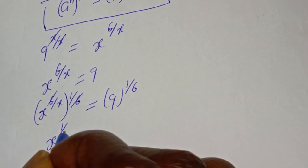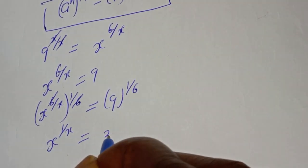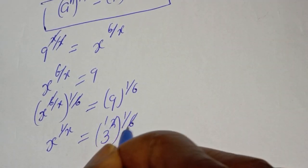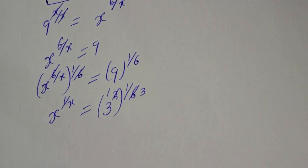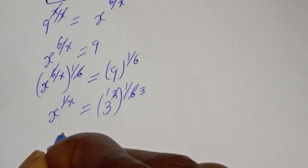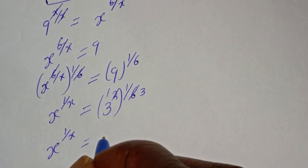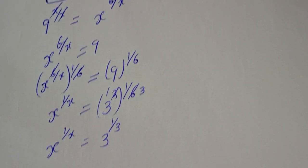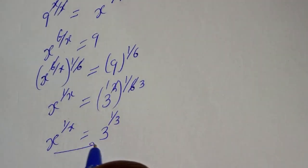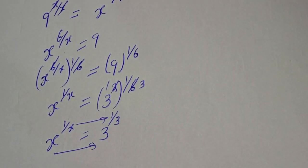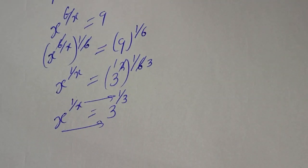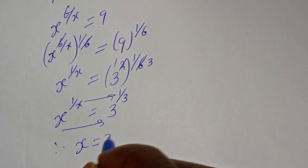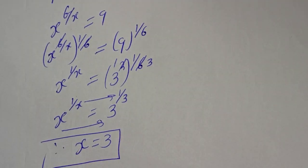s raised to power 1 over 6 is equal to 3 raised to power 1 over 3. Therefore, if you compare this, the base is equal to 3 and the exponent is equal to 1 over 3. Therefore, our answer is s is equal to 3. This is the final answer.